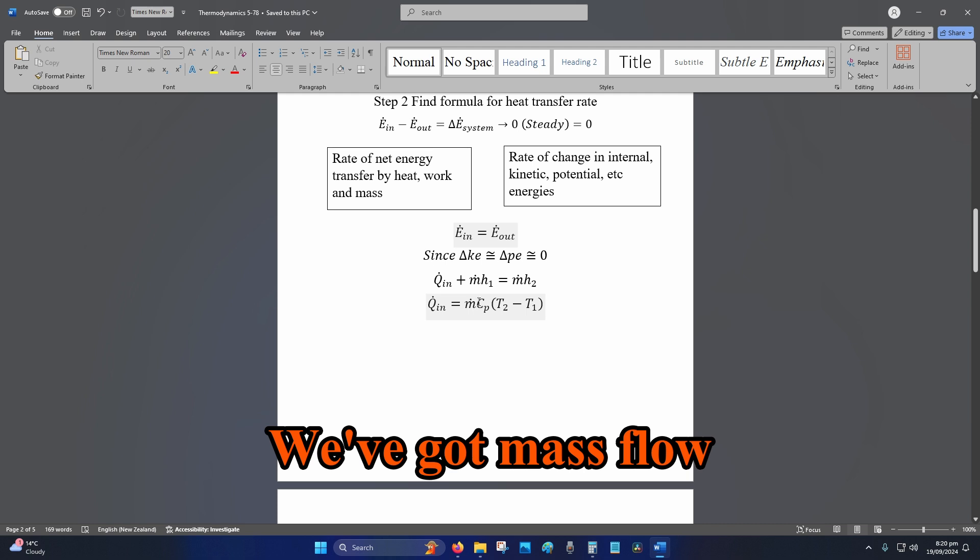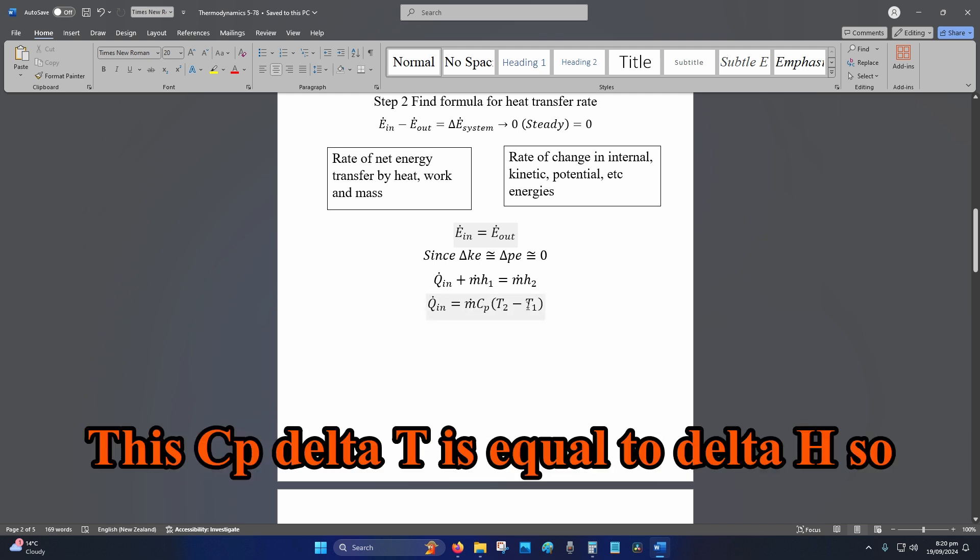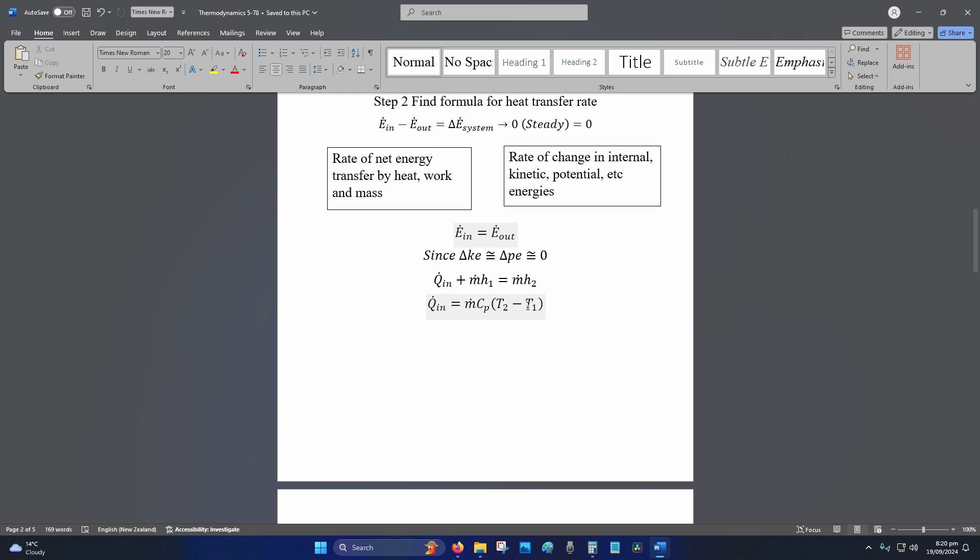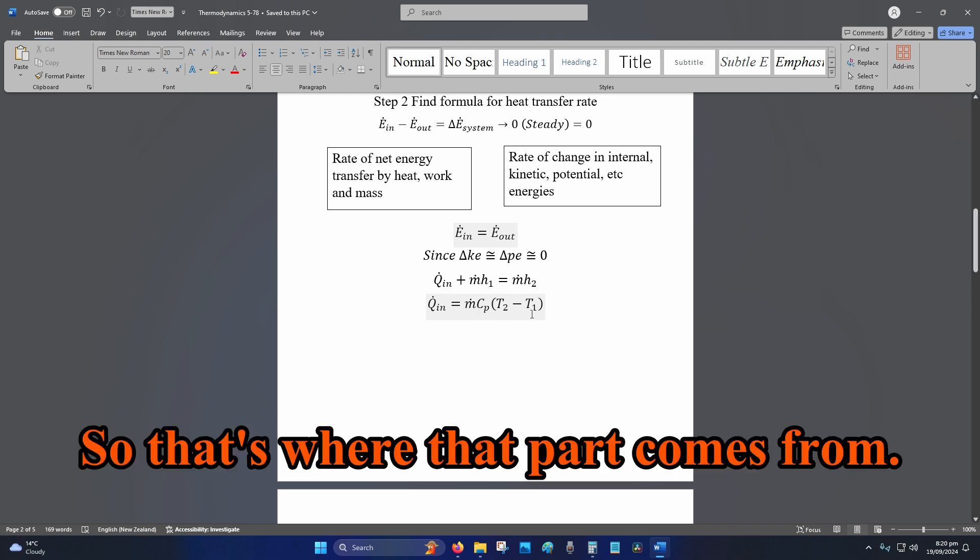We've got mass flow rate which is constant. This Cp delta T is equal to delta H, so the change in enthalpy. So that's where that part comes from.